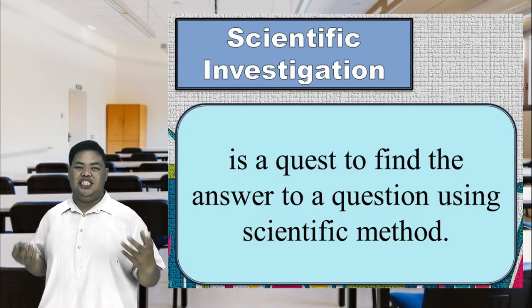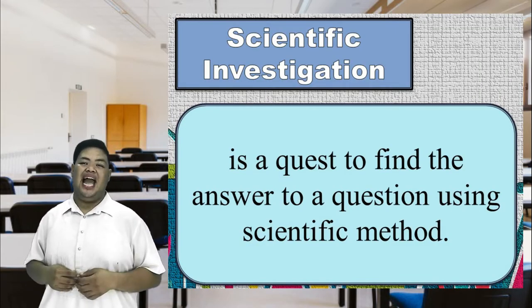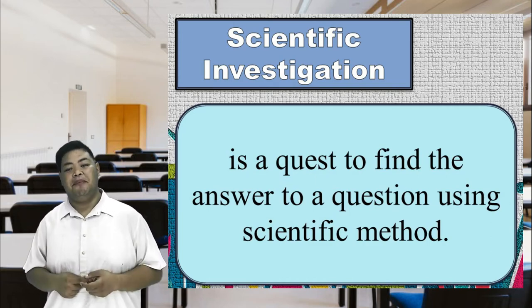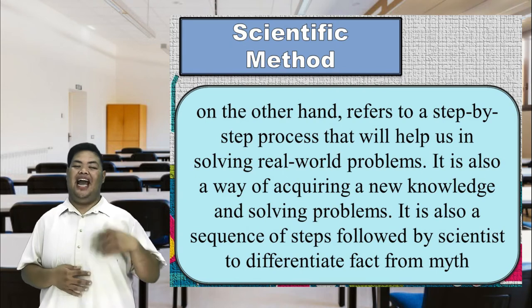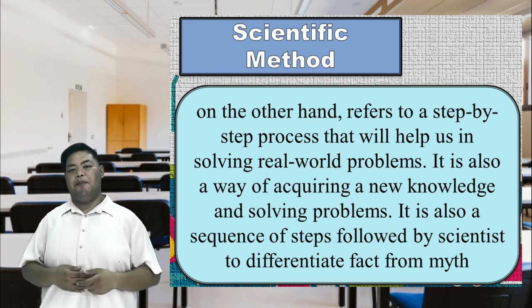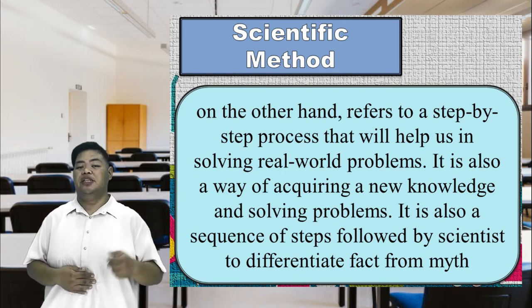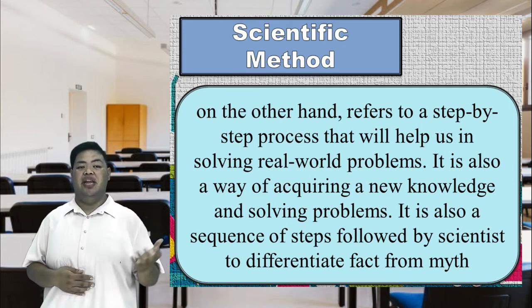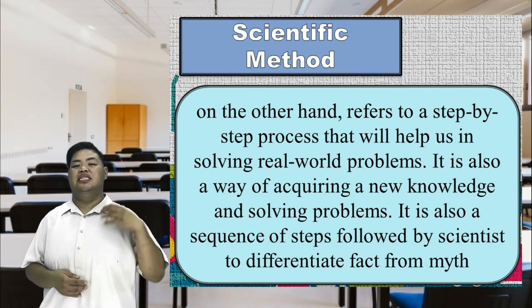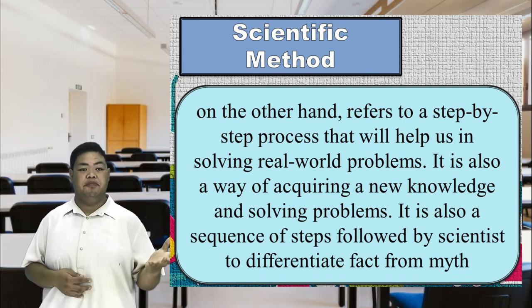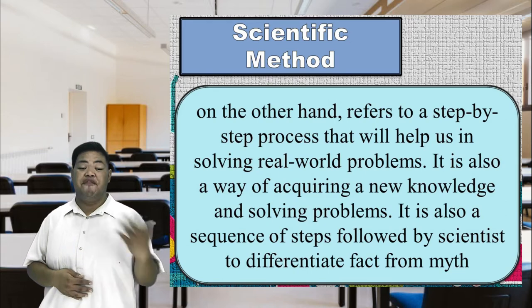Are you done? Let us check if your answers are correct. I hope you all got it right. This time, let us define scientific investigation and scientific method. Scientific investigation is a quest to find the answer to a question using scientific method. While scientific method, on the other hand, refers to a step-by-step process that will help us in solving real-world problems. It is also a way of acquiring new knowledge and solving problems. It is also a sequence of steps followed by scientists to differentiate fact from myth.